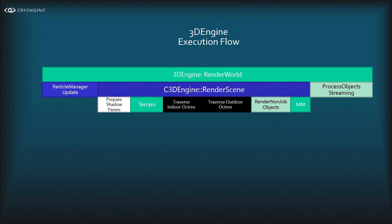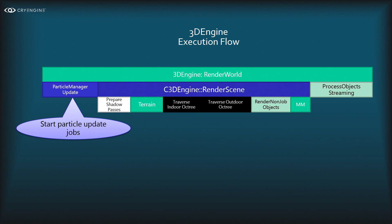Let's look at the rough execution flow of the 3D engine. It all starts with the RenderWorld function called by CSystem. From left to right, we have the particle manager update, which updates all particle emitters and starts update jobs for all the particles. In many scenes we have hundreds of thousands of particles that all need to be simulated.